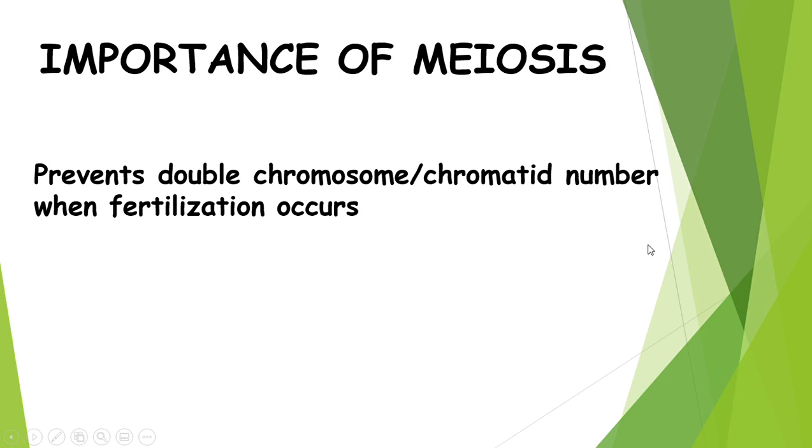Meiosis is important because it prevents a double amount of chromosomes or double amount of chromatids when fertilization occurs. If you take a somatic cell of an animal and combine it with another somatic cell, you'll have far too many chromosomes or chromatids for that organism to function. We as animals cannot function with more than the diploid set that we have. We as humans, if we have more than 46 or less than 46, we cannot function.